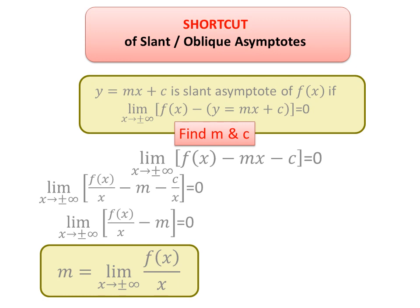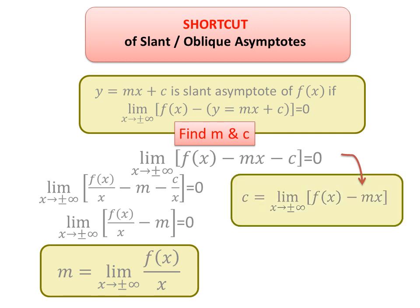From that equation you can solve it for c like this one. So this will be the value of c. First you have to find m, then you will plug it in this formula, then you can calculate c. So we have a slant asymptote like this: mx + c. Let us solve some examples.